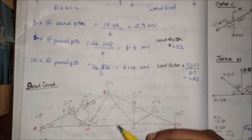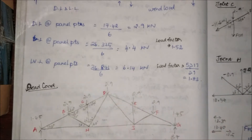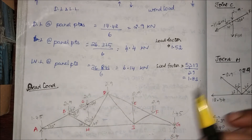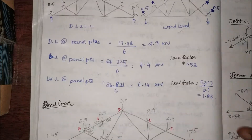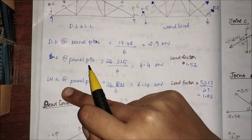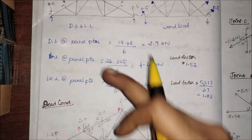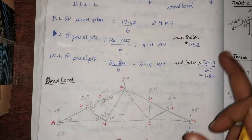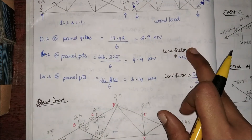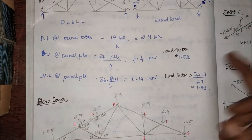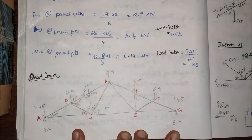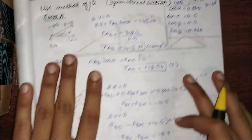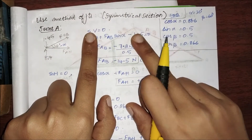One quick tip here: you have to find the axial load for all the load conditions — dead load, live load, and wind load. Once you find the dead load axial forces, you can just multiply a load factor, which will give you the axial load for the other load conditions also. We will look into this in detail in the upcoming lecture. Coming to the method of joints for the given section at joint A.